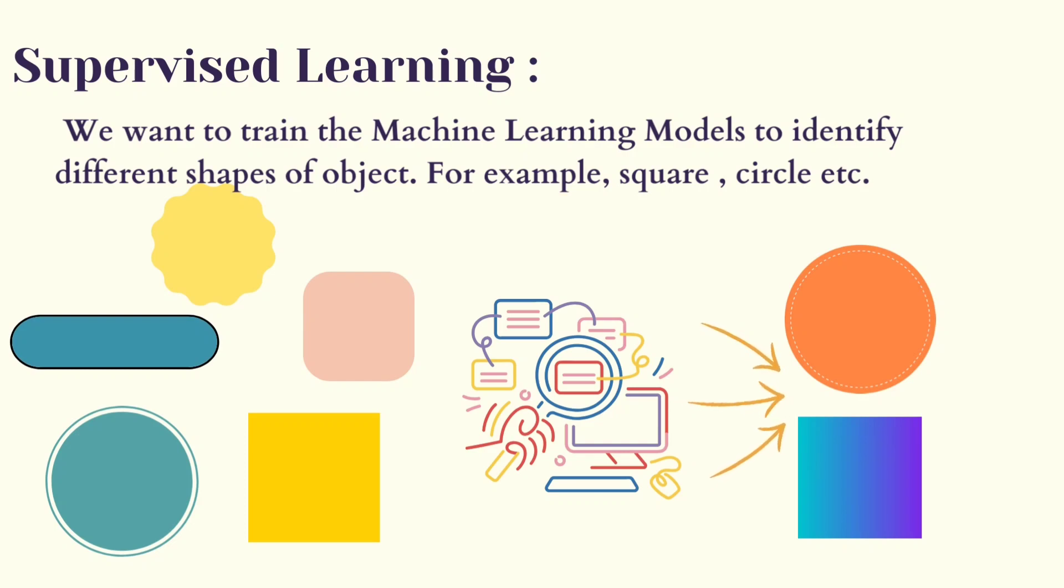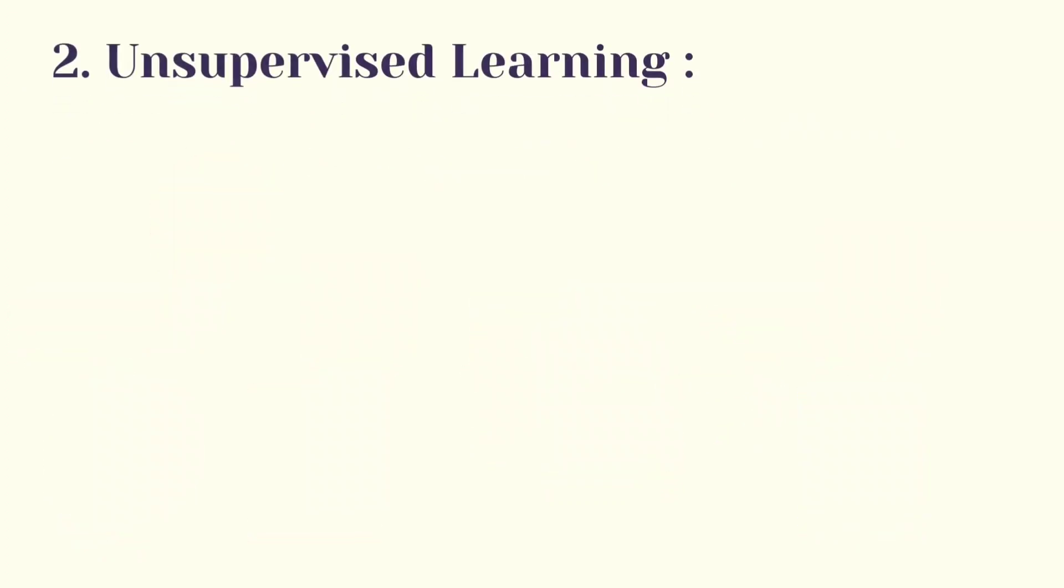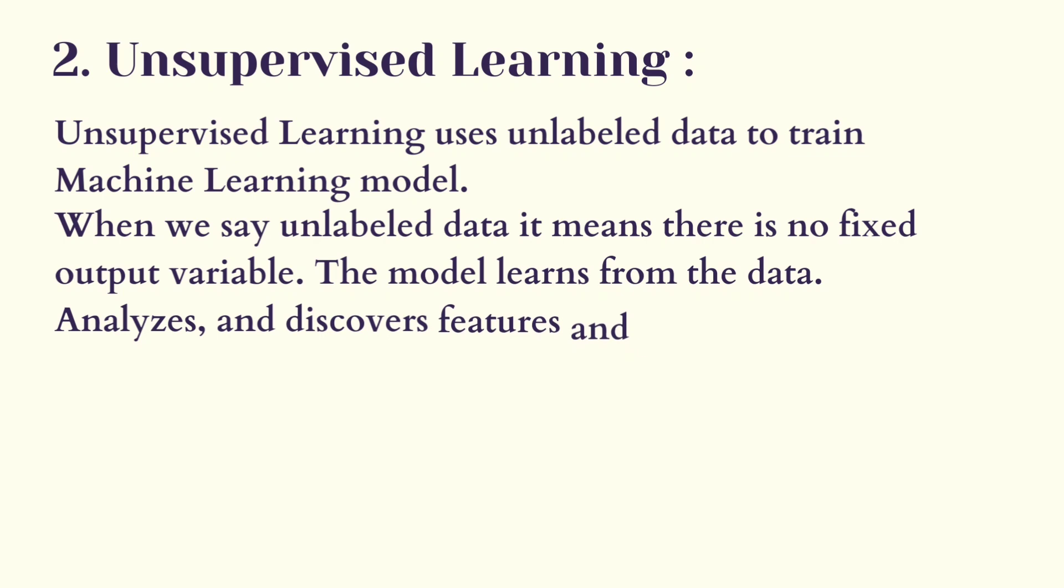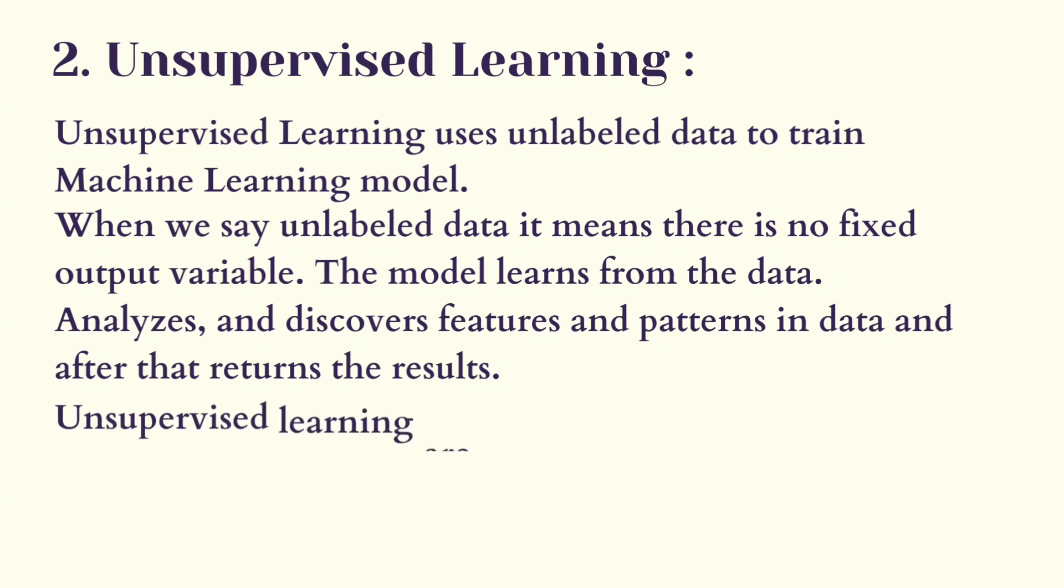Unsupervised learning uses unlabeled data to train machine learning models. When we say unlabeled data, it means that there is no fixed output variable. The model learns from the data, analyzes and discovers features and patterns in the data, and after that returns the result.